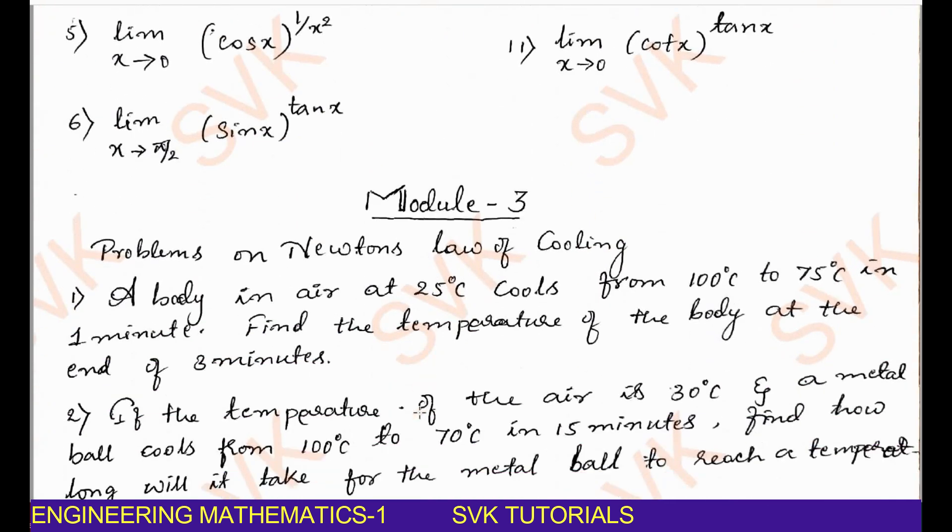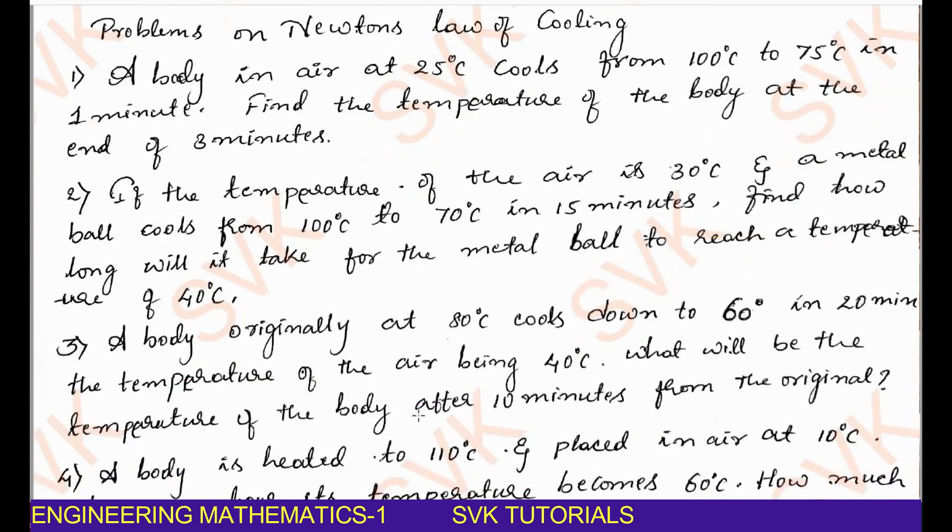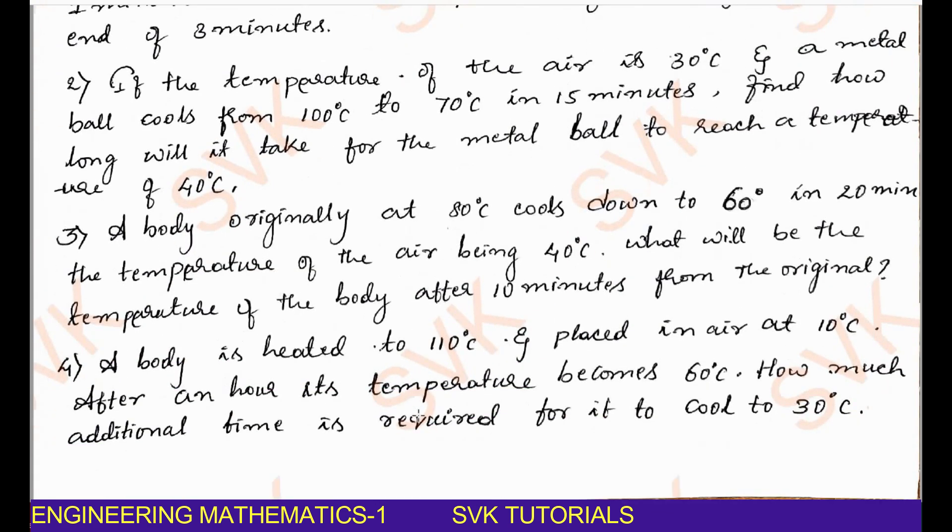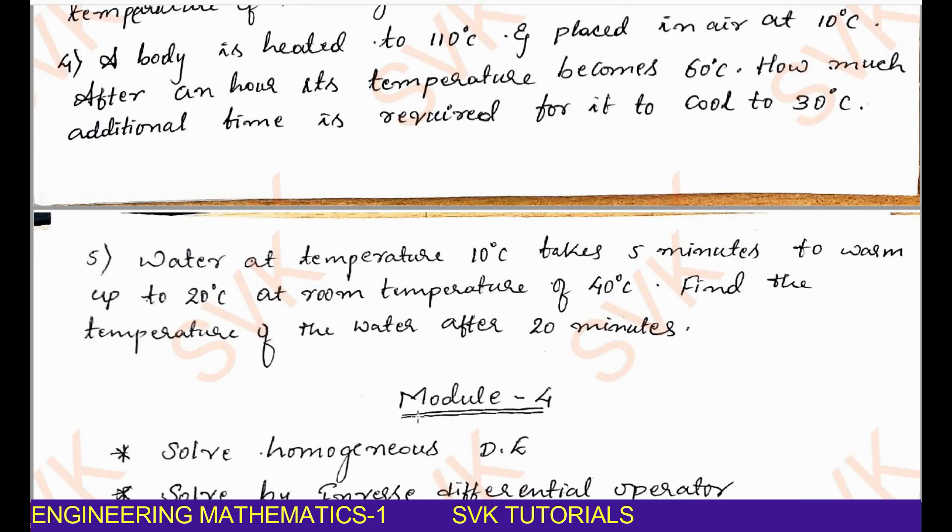Moving on to module 3, you can study only Newton's law of cooling problems. I have highlighted a few problems here, that is mainly 4 problems. You can study 4 to 5 problems I have listed. You study these 5 problems, it is enough for your examination. Minimum 6 marks you can score in this module. Finally, you have scored in the first module 6 marks, in the second module 12 marks, in the third module 6 marks. 12 plus 12, 24 marks you have been scored here.